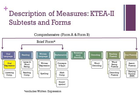Comparatively, the KT-2 consists of a comprehensive form and a brief form, with eight major components and 14 subtests. The comprehensive form comes in form A and B and covers the full set of subtests, taking between 30 to 85 minutes to complete. The brief form tests reading, spelling, and mathematics, and can take anywhere from 10 to 40 minutes.